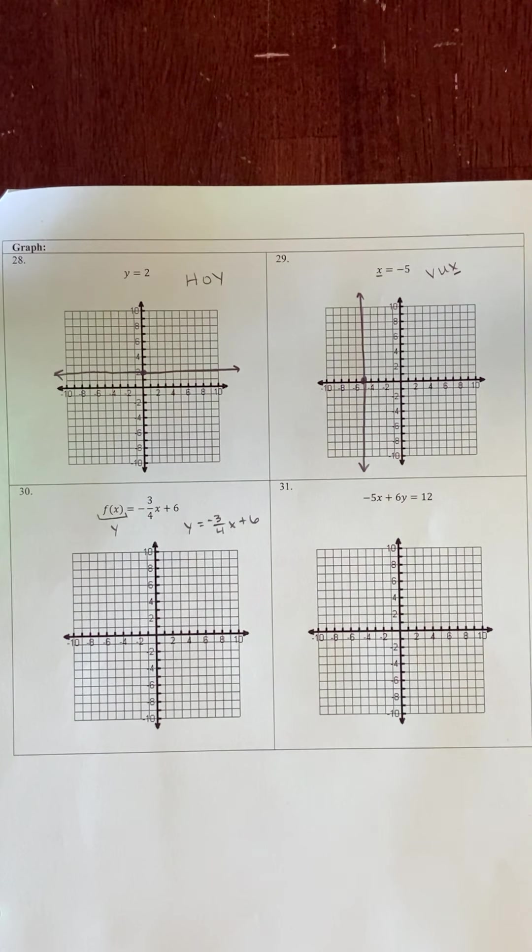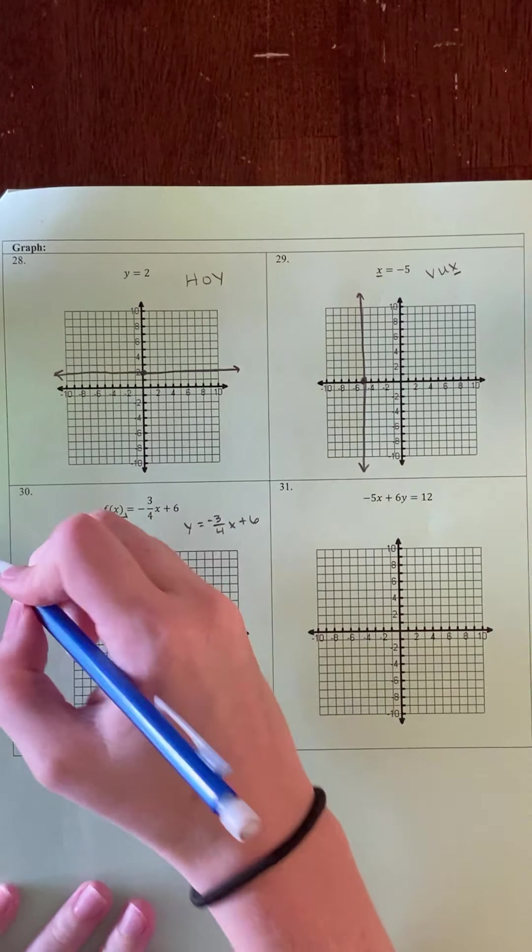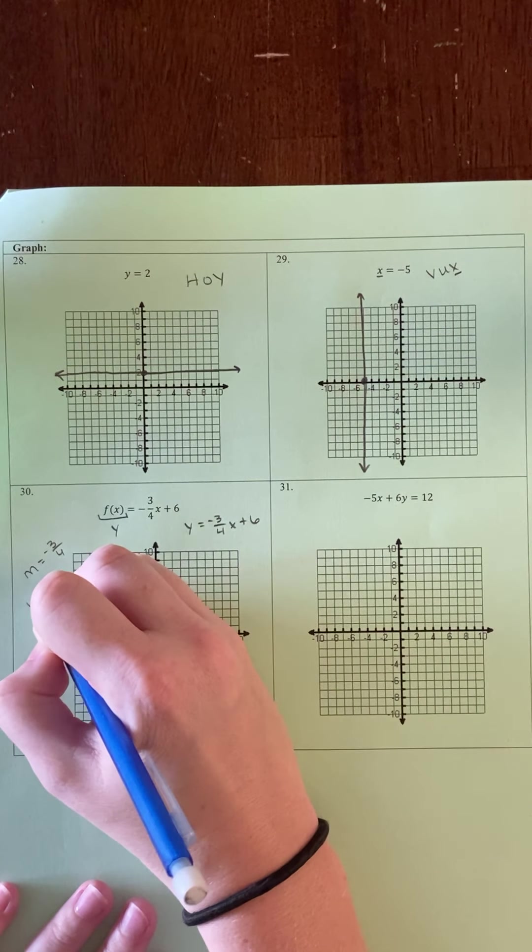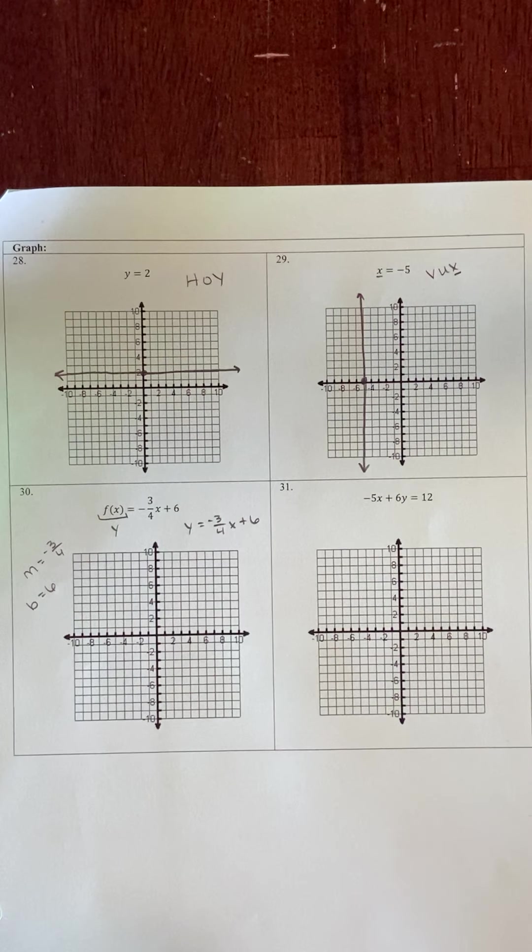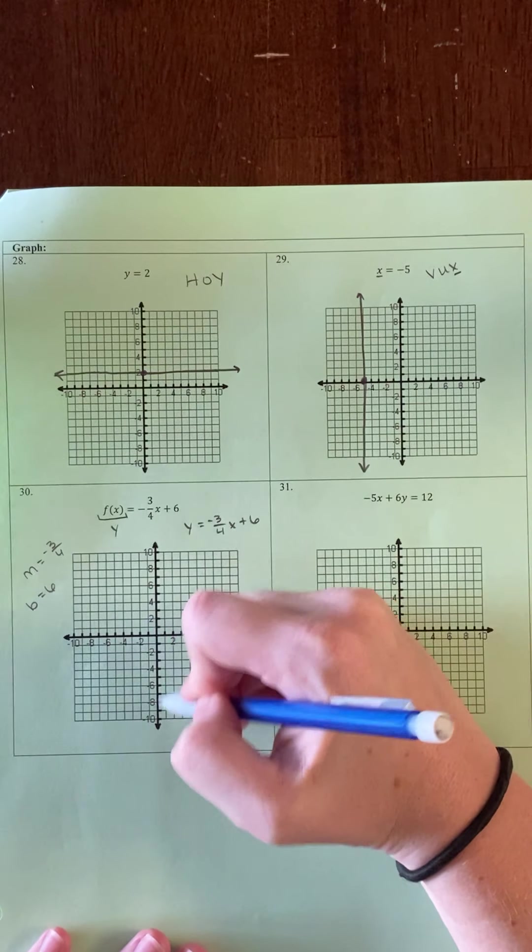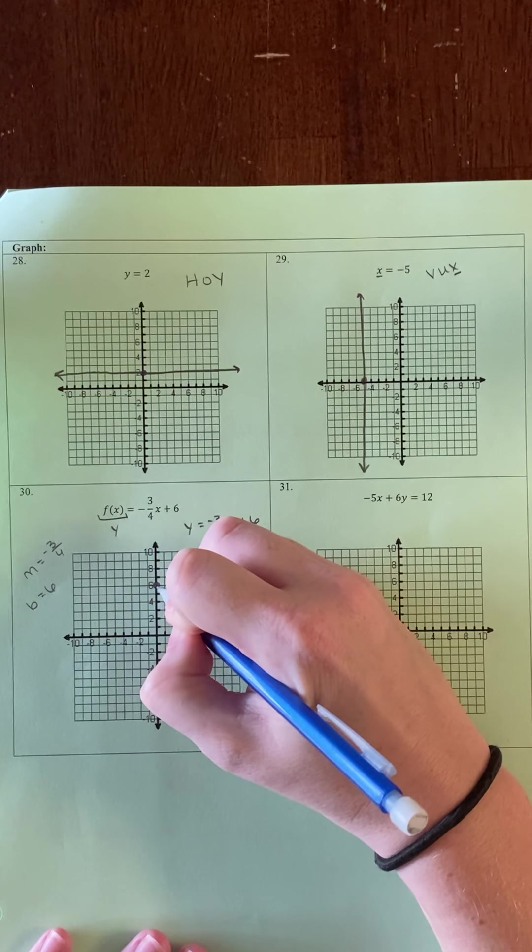This is in slope-intercept form. Our slope is negative 3/4 and our y-intercept is 6. When we graph this, we want to graph our y-intercept first. So I'm going to go on the y-axis to positive 6 and plot a point.